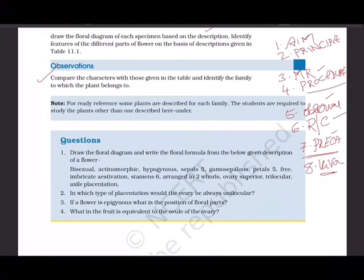For example: bisexual flower, actinomorphic, hypogynous, five sepals gamosepalous, petals five free, imbricate aestivation, six stamens arranged in two whorls, ovary superior trilocular, axile placentation. You must know what each term means - bisexual flower, actinomorphic or zygomorphic, hypogynous, epigynous, perigynous. Take a notebook and write all technical words related to this chapter and experiment.